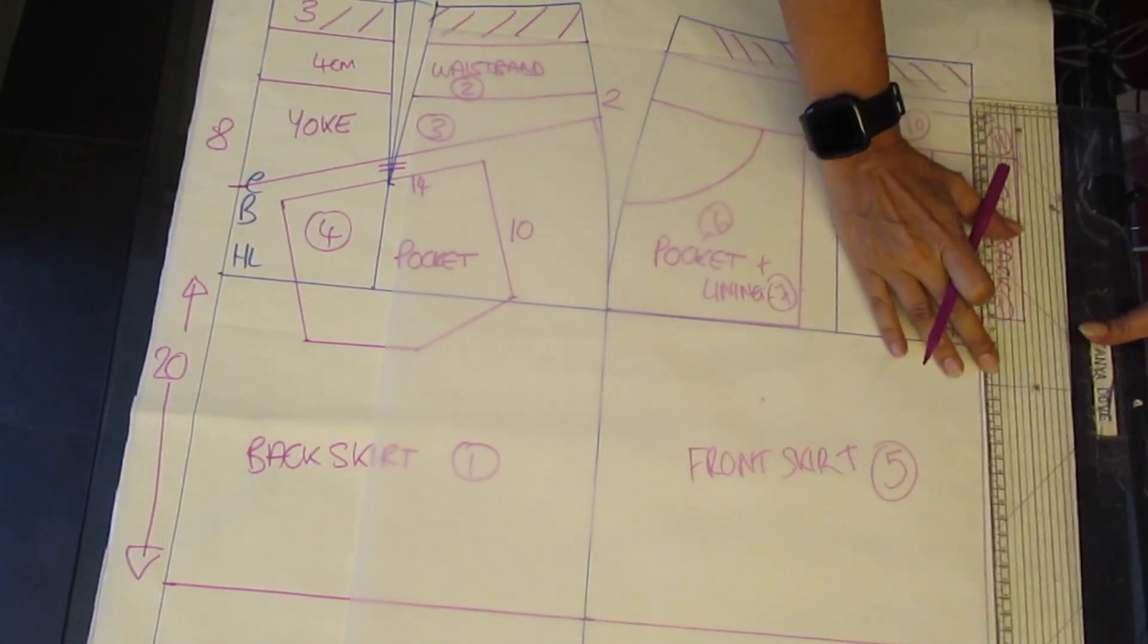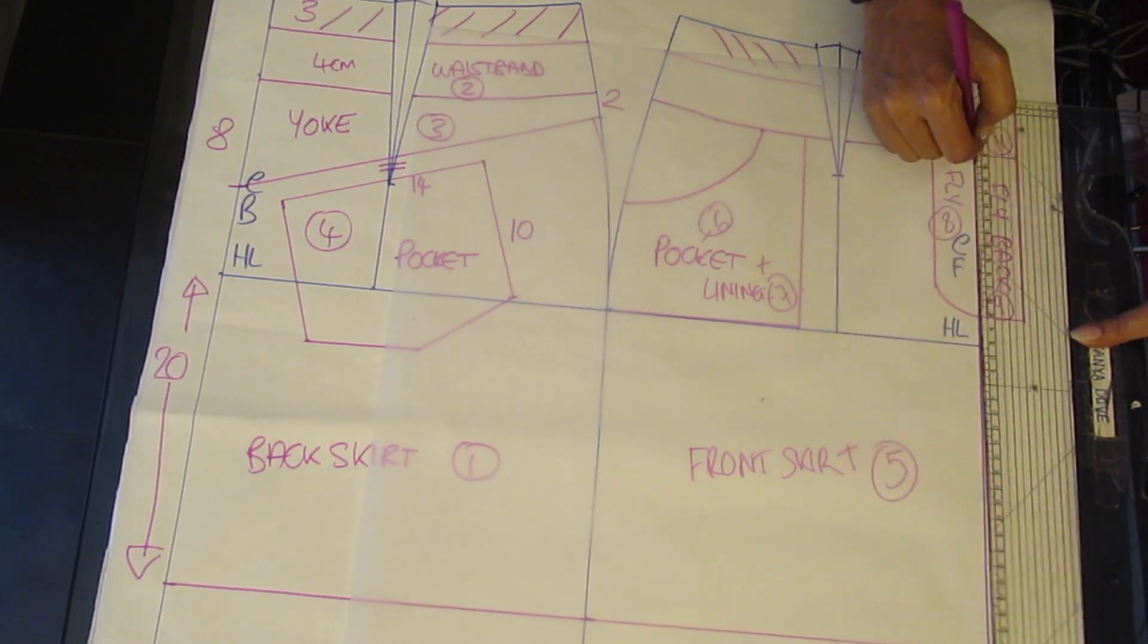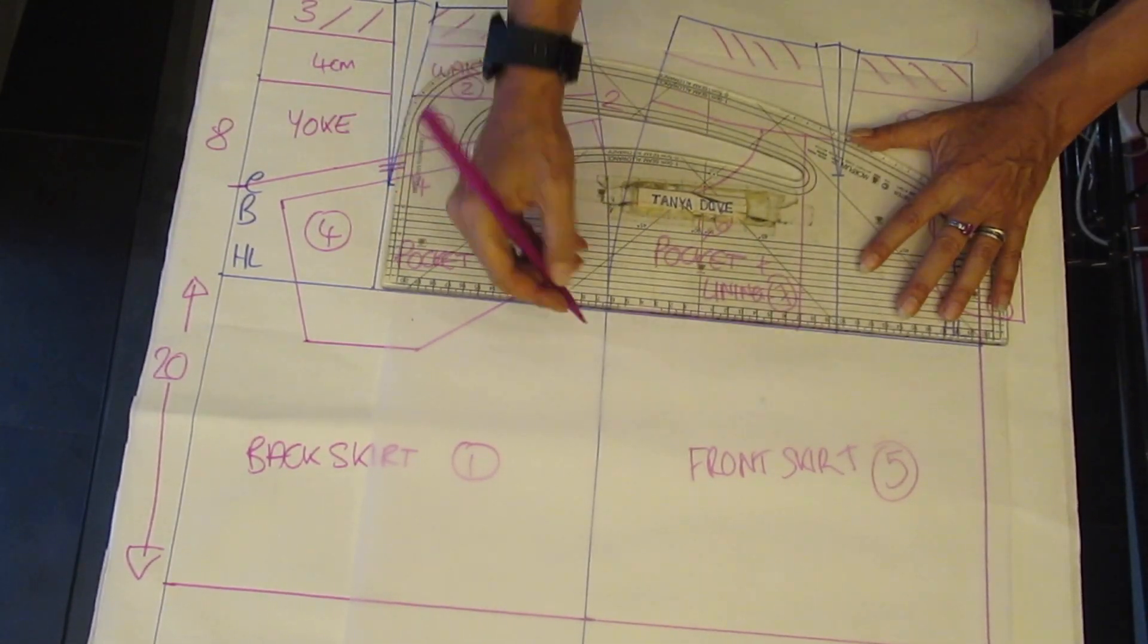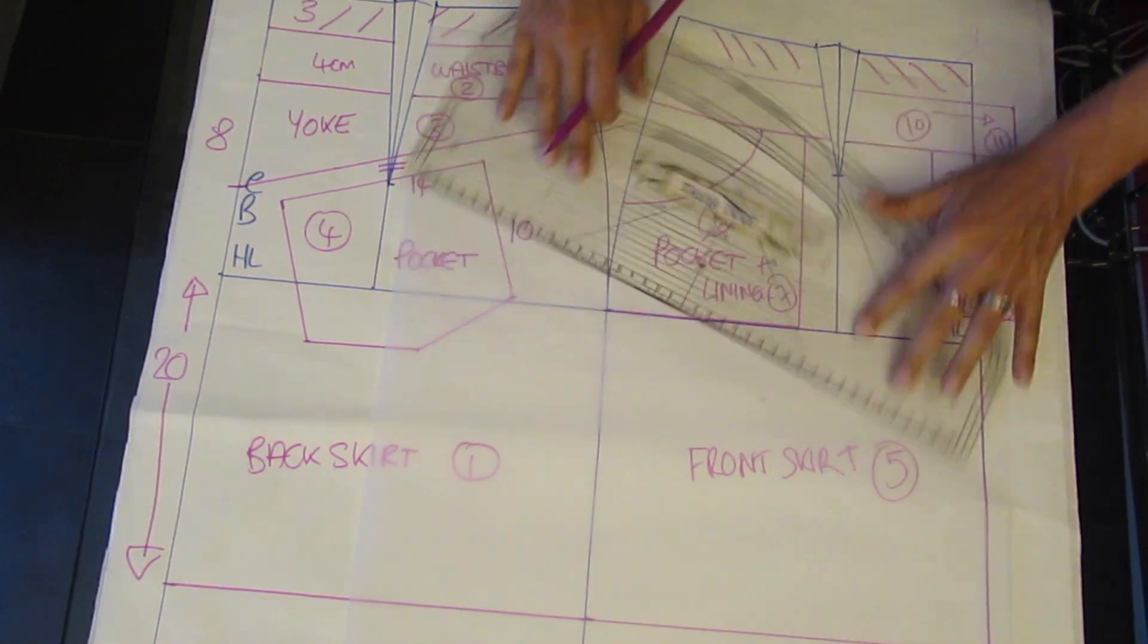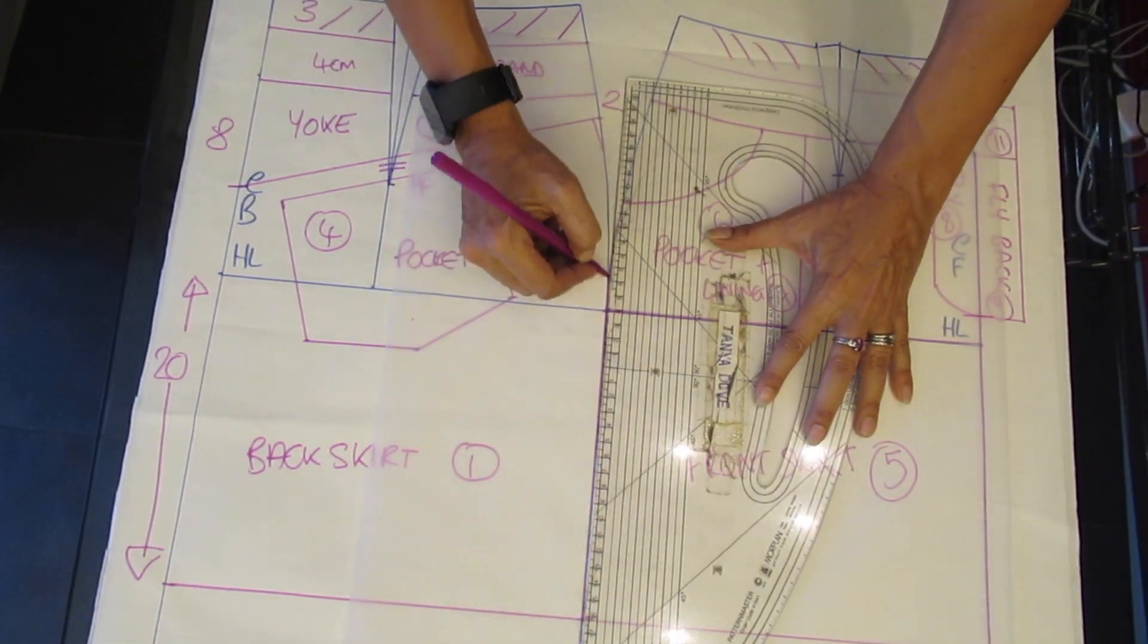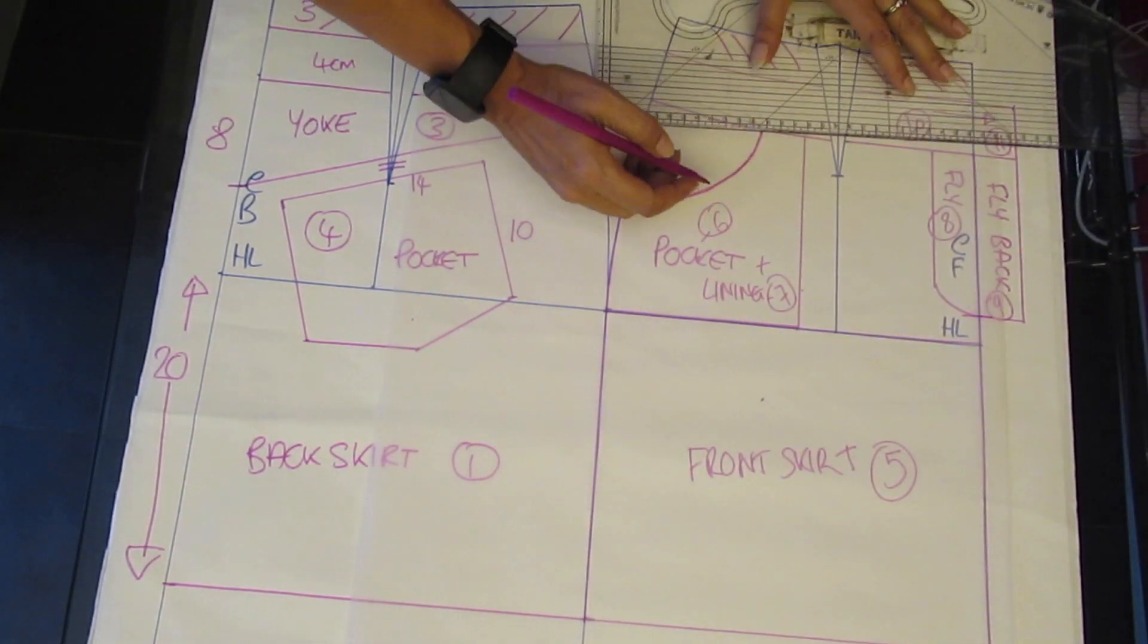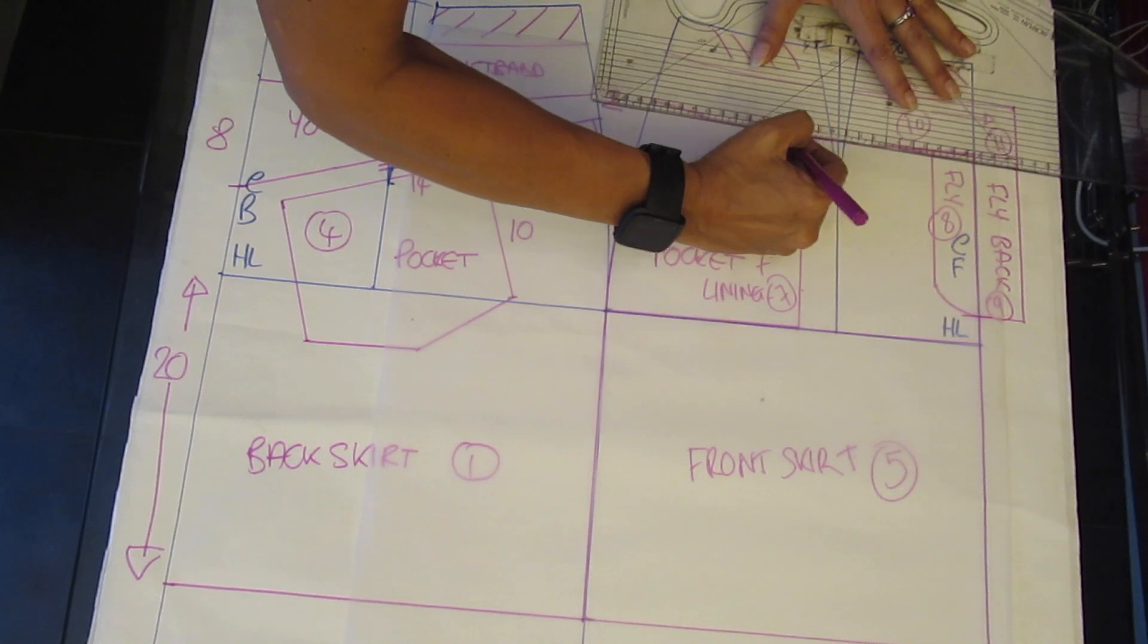Now for the front pattern piece. The front skirt at the side you need to be careful to make sure that you are going down the pocket opening line. And not taking it to the top. The part of the top is part of the pocket back.